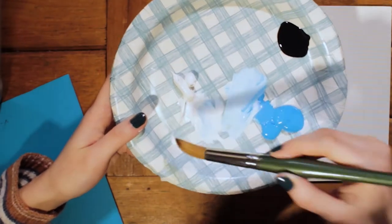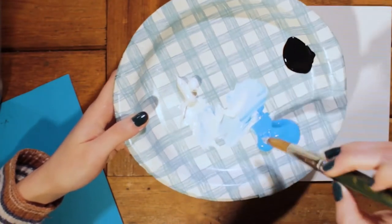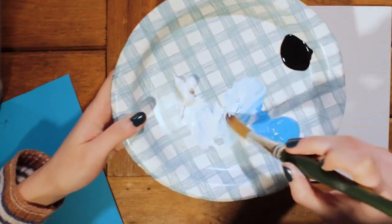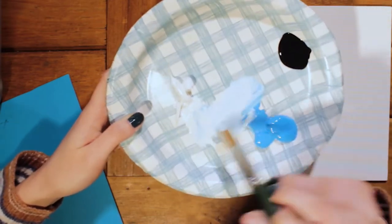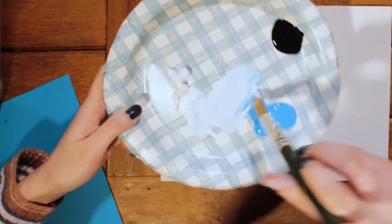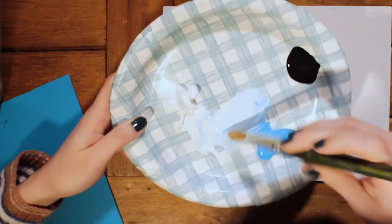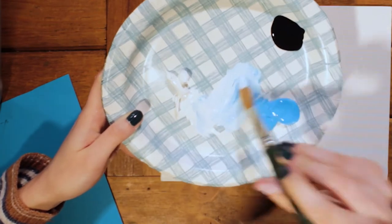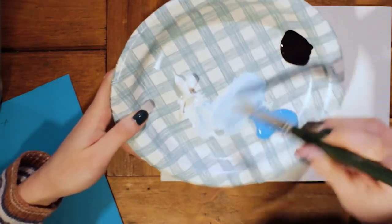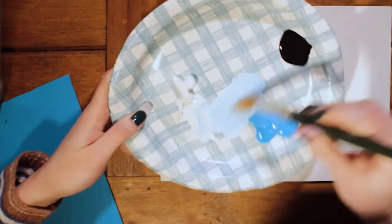So you're first going to start with your sky. You're going to want to mix some white with the color that you chose. You want it to be still pretty light, but you can make it a little brighter if you want to, as long as it's just not the color that you chose right out of the bottle.